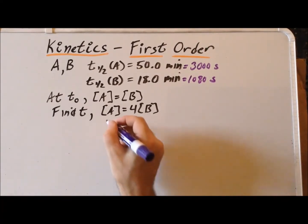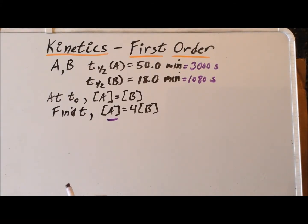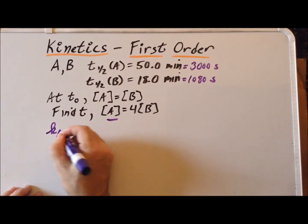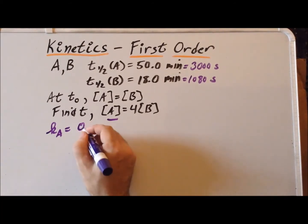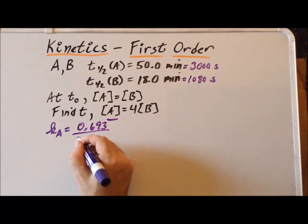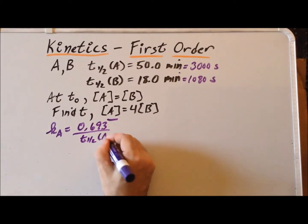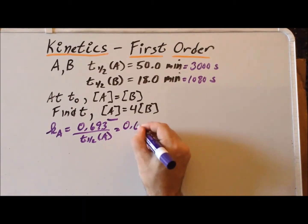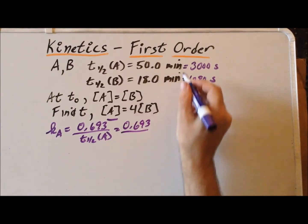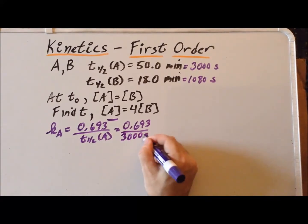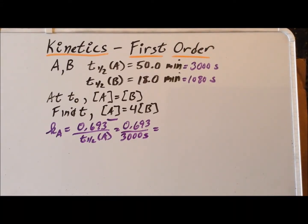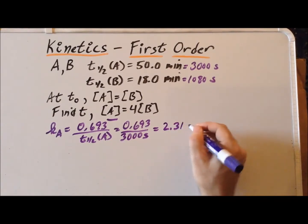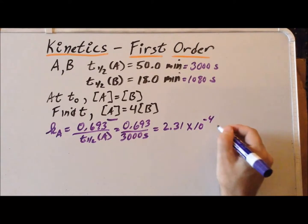Now that we have these values, we can determine the first-order rate constants for A and for B. Recall that the first-order rate constant is equal to 0.693 divided by the half-life. So, the first-order rate constant for A is 0.693 divided by 3,000 seconds. Computing, we get 2.31 × 10⁻⁴ inverse seconds.